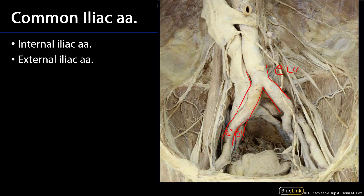The external iliac artery is destined to exit the pelvis and become the femoral artery, and that transition point is the inguinal ligament. So after it passes underneath the inguinal ligament, that external iliac artery becomes the femoral artery, and we'll pick that back up in a moment.